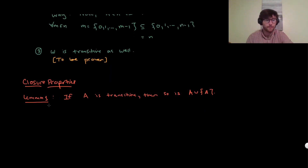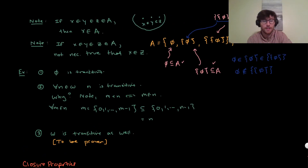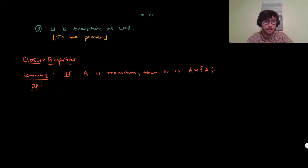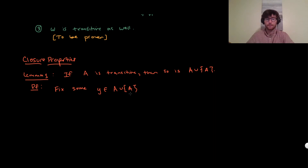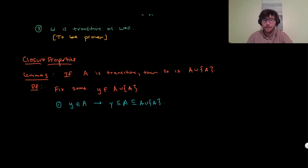Proof: we want to show A ∪ {A} is transitive by showing every element is a subset. Fix some Y in A ∪ {A}. Case one: Y is in A. Since A is transitive, Y is a subset of A. But A is a subset of A ∪ {A}, so Y is a subset of A ∪ {A}, which is what we wanted to show.